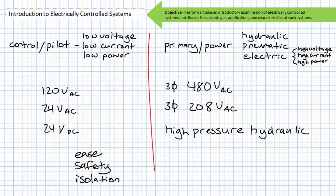The primary or power input to a system could be high voltage, high current, high power electricity, or hydraulic or pneumatic power. The primary signal is governed by the pilot and only acts at its request. The separation of the pilot and primary aspects of an electrically controlled system offer a degree of ease, safety, and isolation.